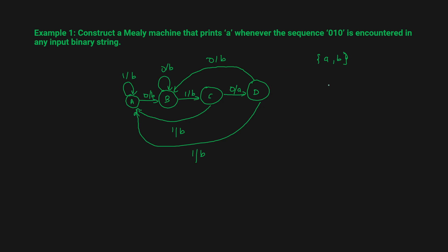Let's try the string 0 1 0 0 0. Starting in state A: input 0 → go to B, output B. In state B: input 1 → go to C, output B. In state C: input 0 → go to D, output A. After seeing 0 1 0 we get output A as expected. Then: input 0 → go to B, output B. In state B: input 0 → stay in B, output B. So we only print 'A' when we encounter the sequence 0 1 0; otherwise we print 'B'.